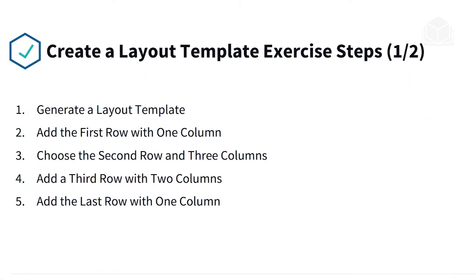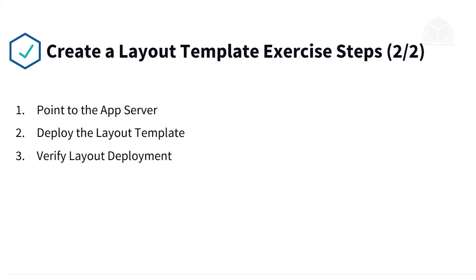Here are the steps we'll be taking in this exercise. First, we'll generate a layout template. We'll add the first row with a column, then choose the second row with three columns. We'll add a third row with two columns, then add a last row with one column. We'll then point to the app server, deploy the layout template, and verify layout deployment.